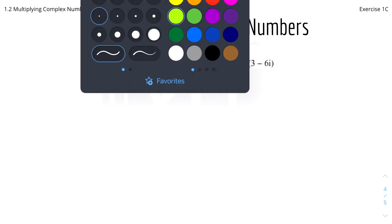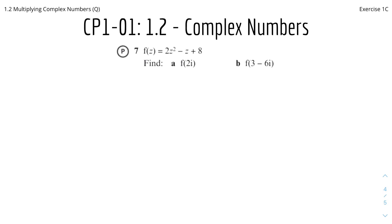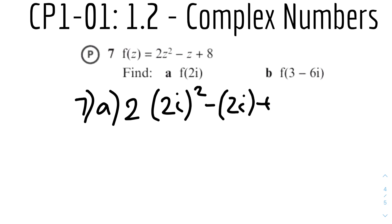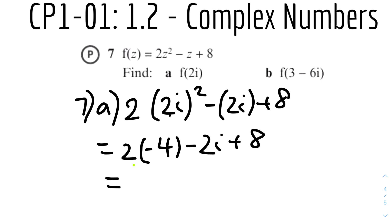Question 7: f(z) = 2z² − z + 8. Part A, find f(2i). Substituting z = 2i: f(2i) = 2(2i)² − 2i + 8. Now (2i)² = 4i² = 4 × (−1) = −4, so 2 × (−4) = −8. And −8 + 8 = 0. We're left with −2i. So f(2i) = −2i.